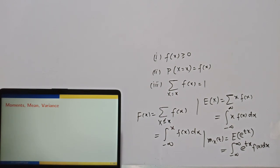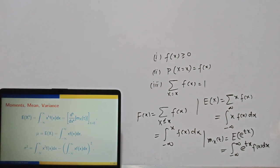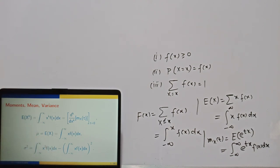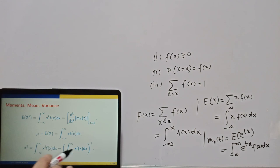Moments, mean, and variance: these definitions are also easy to understand from the discrete case. The k-th moment is given by the expectation of x^k. In the continuous case, summation is replaced by integration. Mean is the expectation of x, variance is E(x²) minus [E(x)]². Everywhere the summation sign is changed to an integral sign.